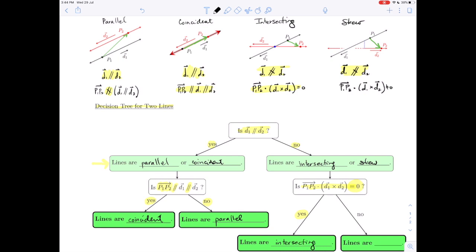And if the triple scalar product is not zero, then the lines are non-coplanar, which makes them skew.